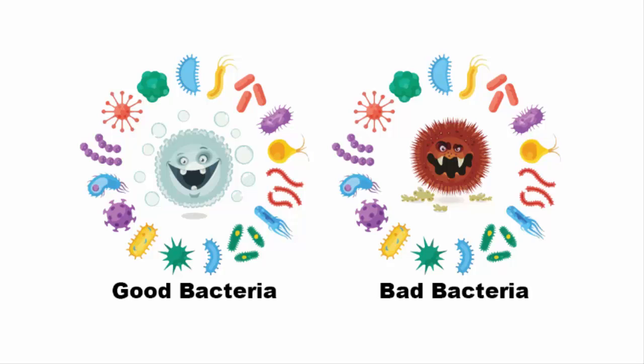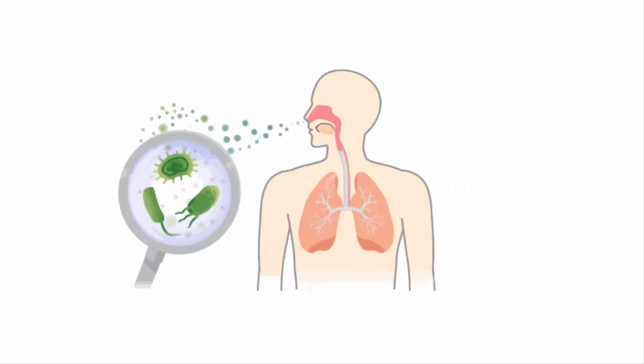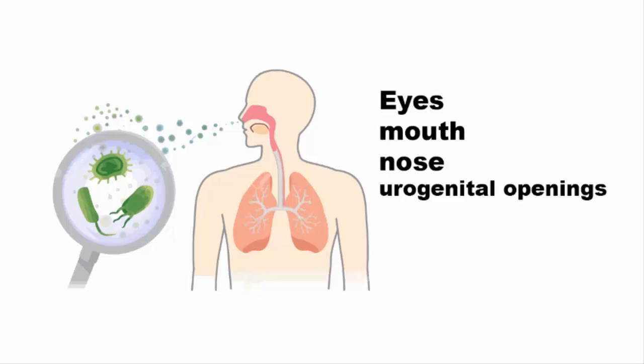The same principle of good and bad bacteria applies to animals too. Pathogens usually enter our bodies through eyes, mouth, nose, or urogenital openings, or through wounds and bites that breach the skin barrier. A simple example would be: an infected person touches a surface such as a door knob, table, or handle, leaving behind germs that are then transferred to another person who touches that surface and then touches his or her eyes, mouth, or nose. That's the most common way pathogens enter our bodies.